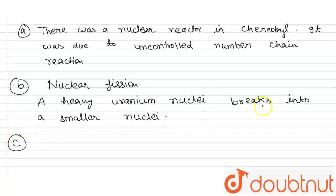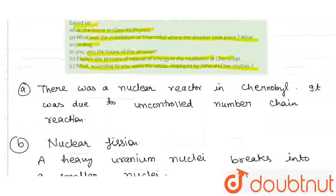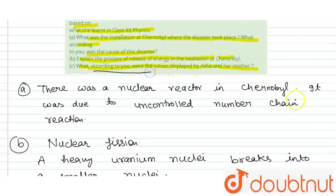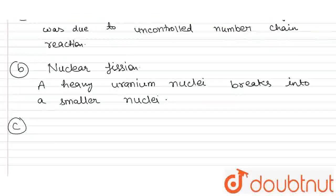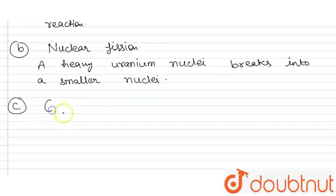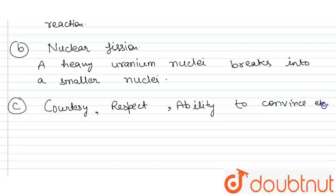Now, the third part. What, according to you, were the values displayed by Asha and her mother? So, values displayed by Asha and her mother are courtesy, respect, ability to convince, etc. I hope you understand the solution.